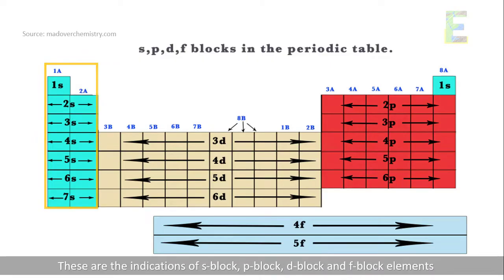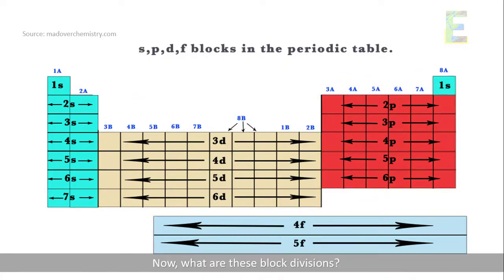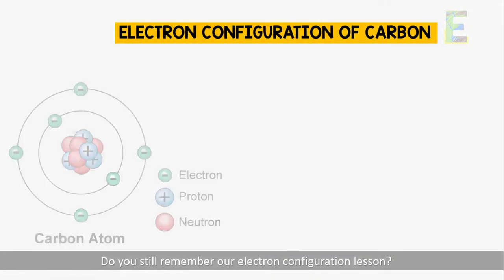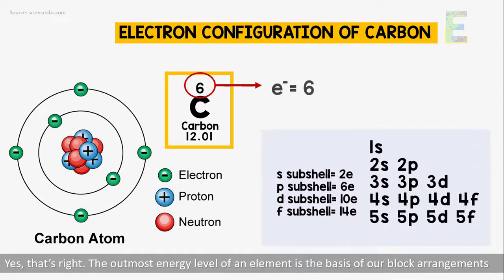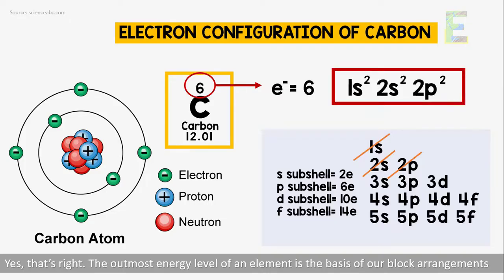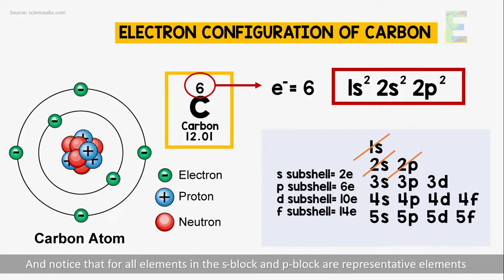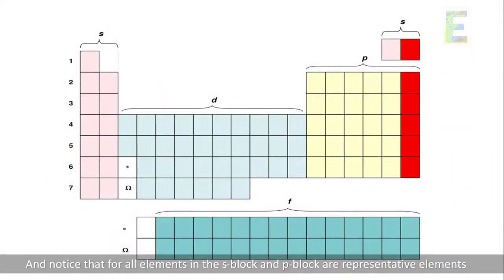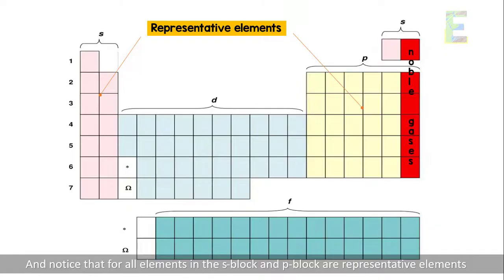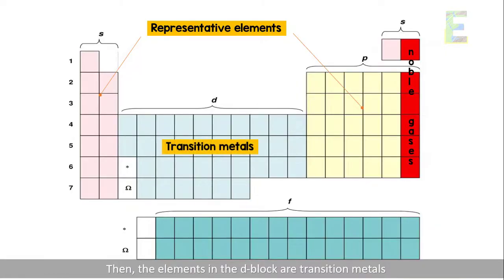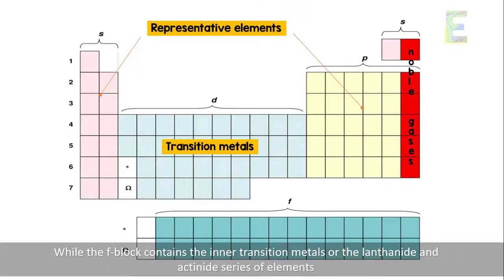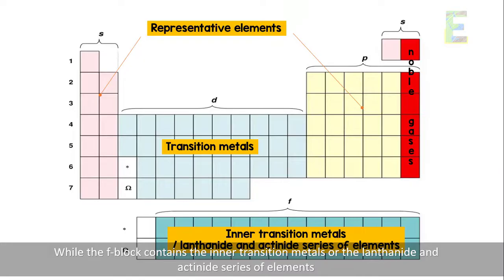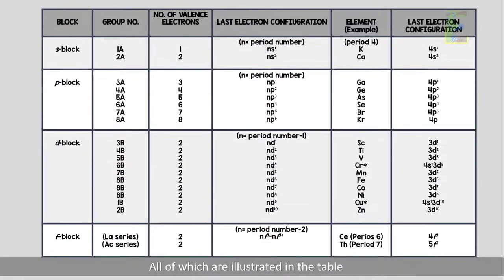These are the indications of the S block, P block, D block, and F block elements. The outermost energy level of an element is the basis of our block arrangements. All elements in the S block and P block are representative elements. The elements in the D block are transition metals, while the F block contains the inner transition metals, or the lanthanide and actinide series of elements, all of which are illustrated in our table.